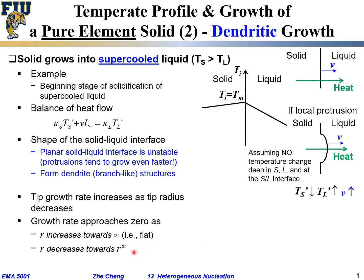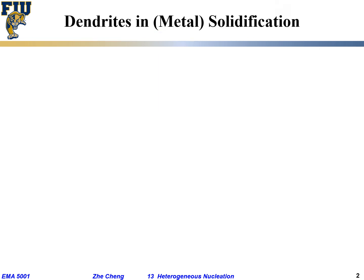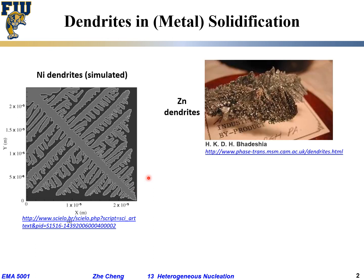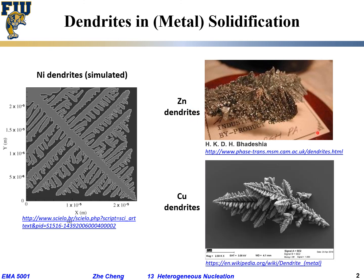Finally, let me show some images of actual dendrites observed for pure elements during solidification. This schematic shows a computer simulation of a nickel dendrite during solidification — you have a primary branch, secondary branches, and tertiary branches. It doesn't remain flat; if the liquid is undercooled, it grows along one direction, and secondary and tertiary branches develop, as simulated here.